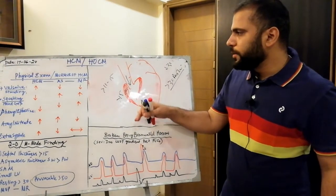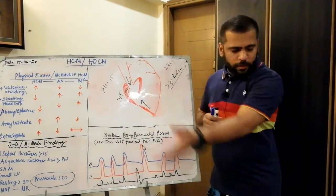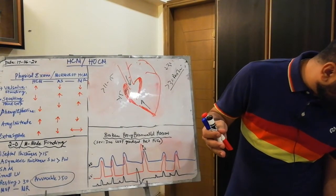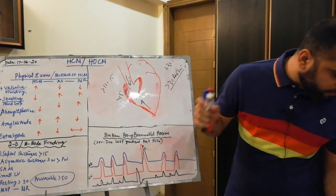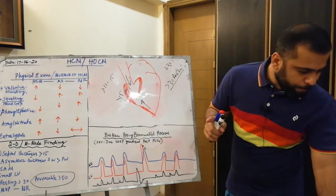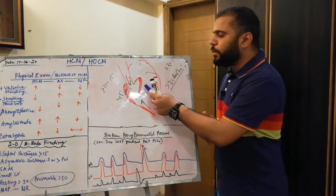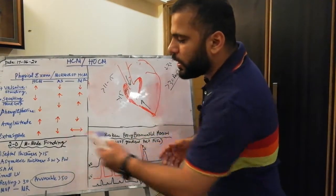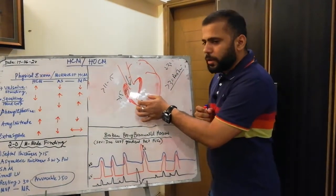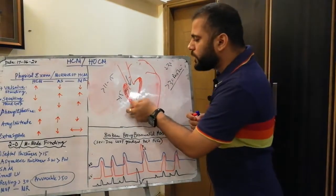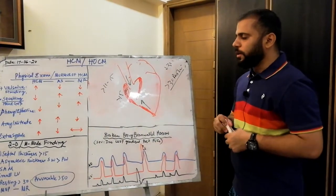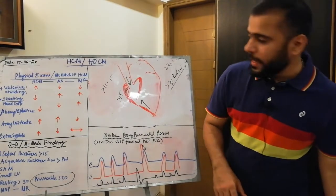That prolapse causes the same SAM phenomenon. Approximately 60% of patients with HCM have a structural abnormality of the mitral valve. Those patients who have a normal mitral valve might still have systolic anterior motion of the mitral leaflet due to the sucking effect of the septum towards the LVOT on the anterior leaflet of the mitral valve.